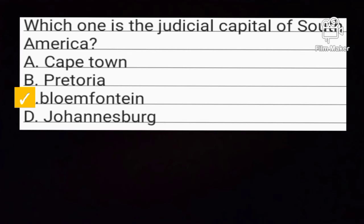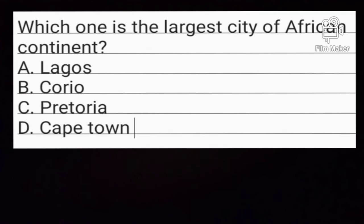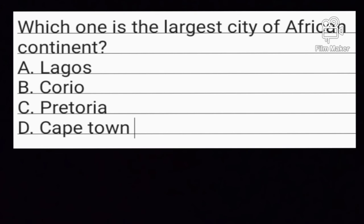Question number 5. Which one is the largest city of the African continent? Option A: Lagos. Option B: Cairo. Option C: Pretoria. Option D: Cape Town. Option B is the correct answer. Cairo is the largest city of the African continent.